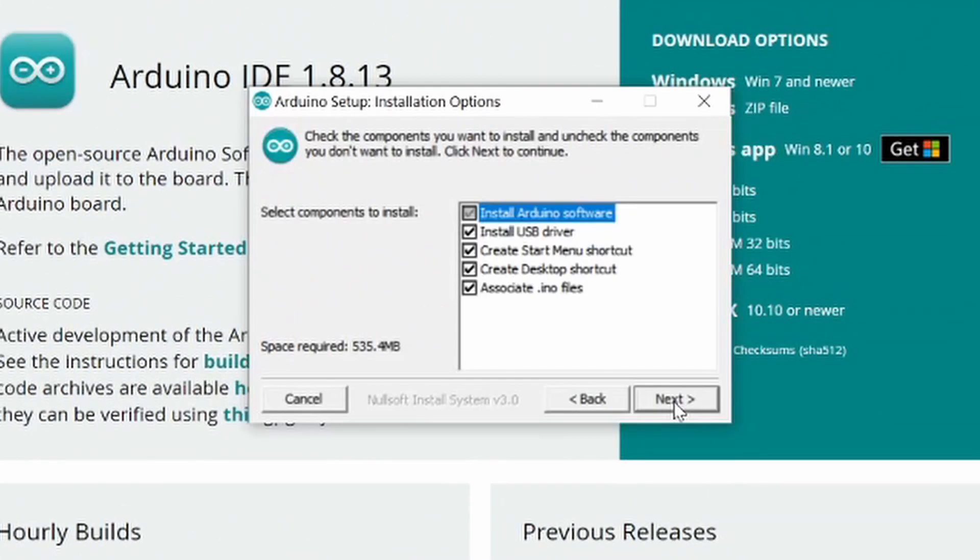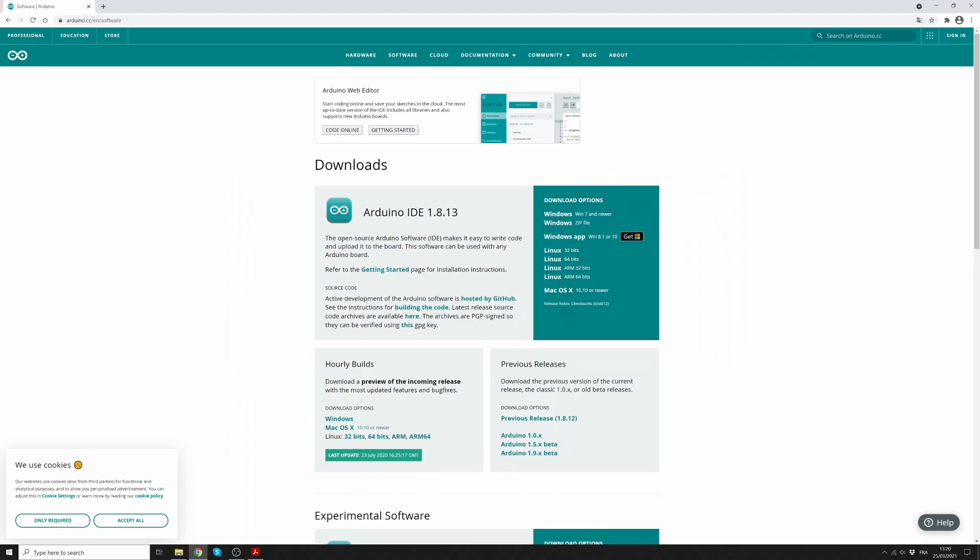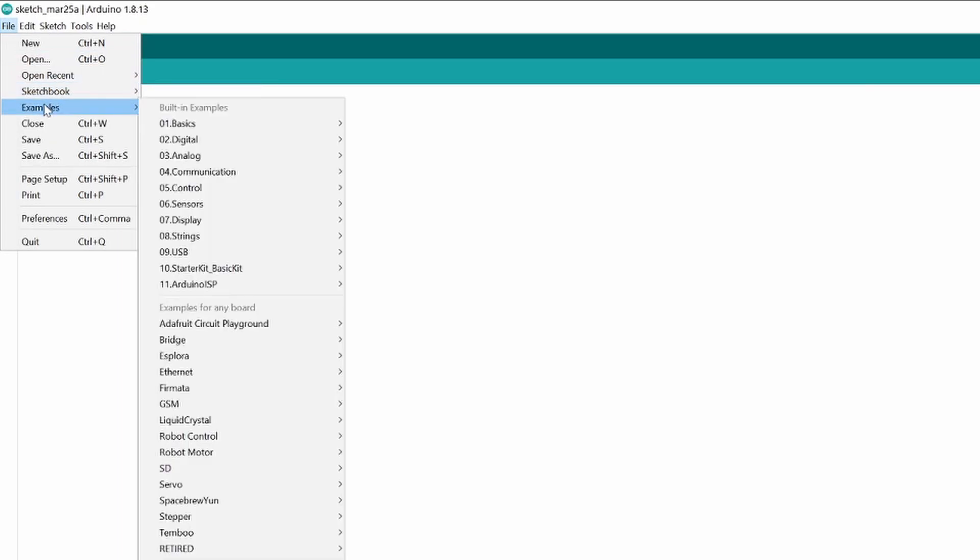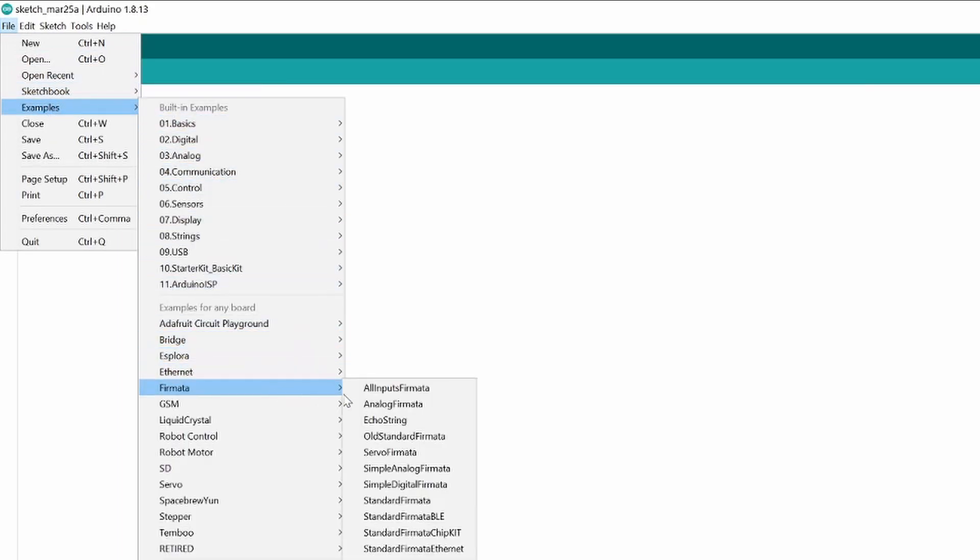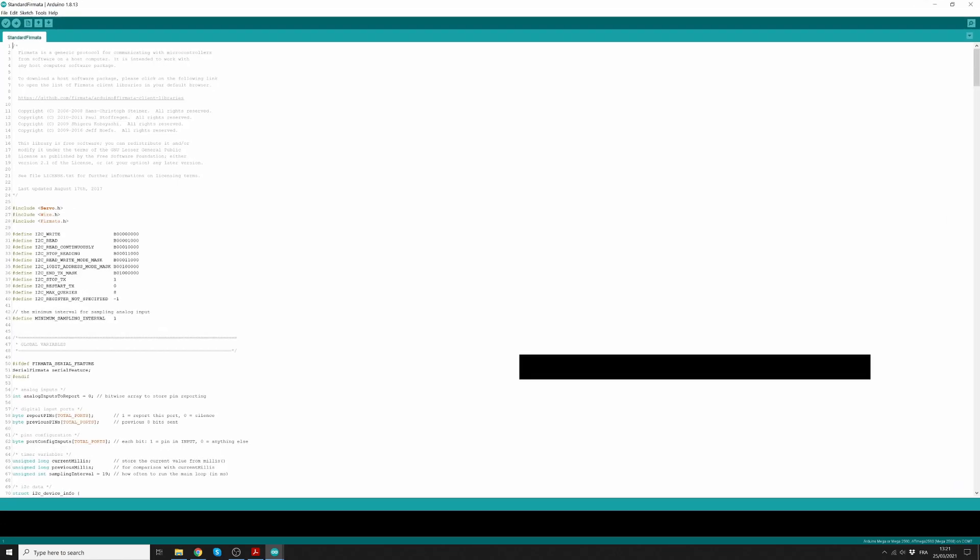Once finished, double-click to launch the installer. Follow the steps to finish installing Arduino. Once done, launch the IDE. In the top left menu, click File, Examples, Firmata, and Standard Firmata to load the Firmata library.